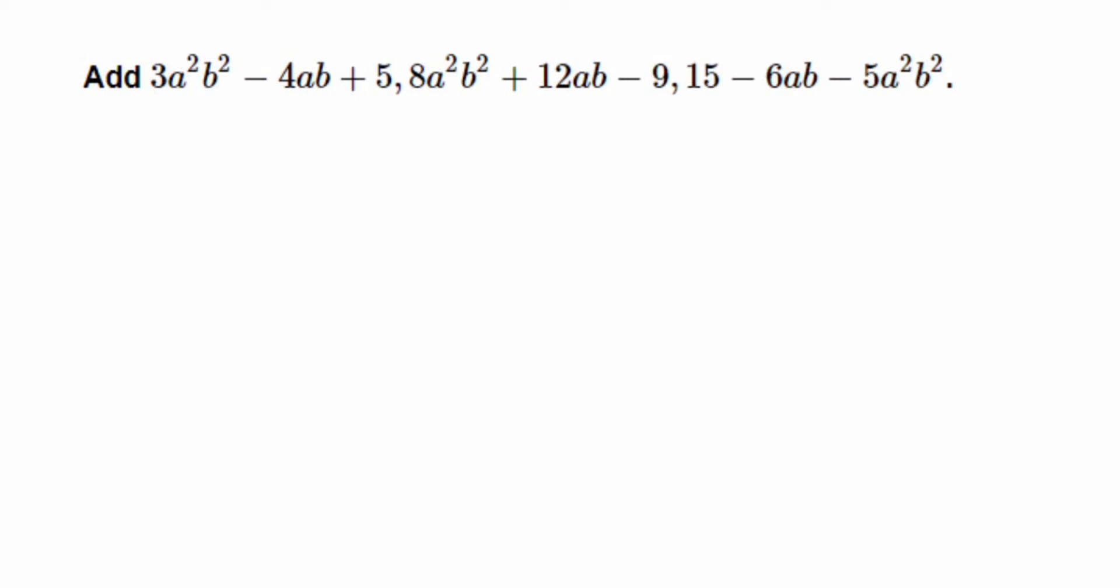Hey everyone, here's a question on algebra. Add 3a²b² - 4ab + 5, then 8a²b² + 12ab - 9, and the last one is 15 - 6ab - 5a²b². We're asked to add these three expressions.